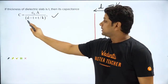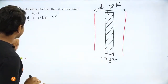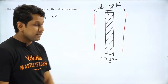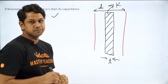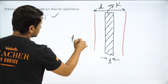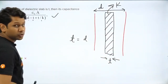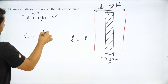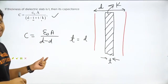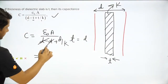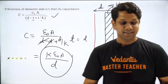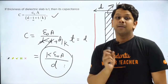तो बच्चो, अगर ऐसा situation आपको दिखे — जब dielectric सिर्फ t thickness में है — तो यह formula use करना होता है: C = ε₀A / (D − t + t/K). यहाँ D plate separation है, t is the thickness of the dielectric slab, और K is the dielectric constant. अब अगर आप assume करो कि dielectric completely filling करता है, तो t equal to D हो जाएगा। उस case में formula बनेगा: ε₀A / (D − D + D/K) = Kε₀A/D — वही formula जो हमने पहले देखा था completely filled वाला।